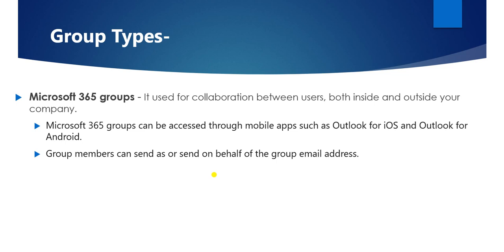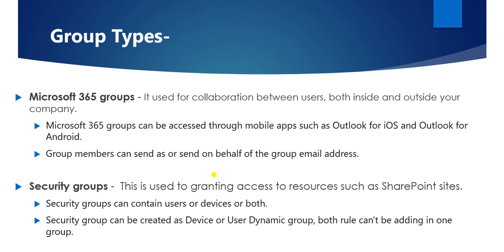We have two types of groups. The first is a Microsoft Office 365 group, which is used for collaboration between users both inside and outside the company. It can be accessed through mobile apps such as Outlook for iOS or Outlook for Android, and group members can send on behalf of the group email address. Office 365 group supports only users, not devices.